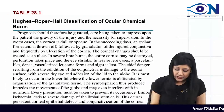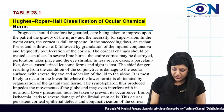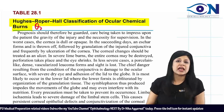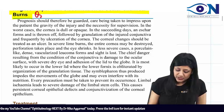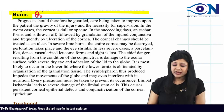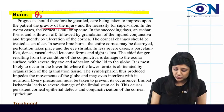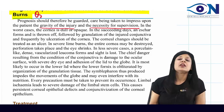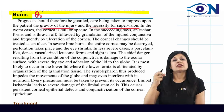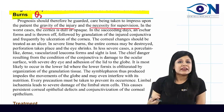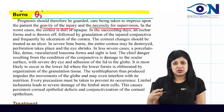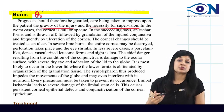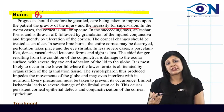A popular classification for alkali burns is the Hughes-Roper-Hall classification. This grading system is used to determine severity, guide the line of action, and counsel the patient about the gravity of the injury and the necessity for supervision.